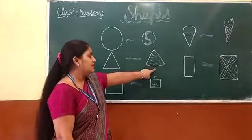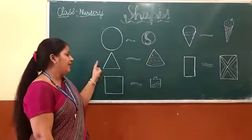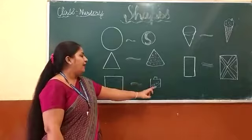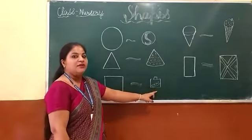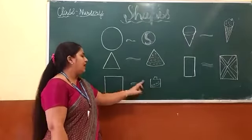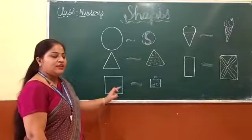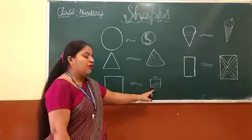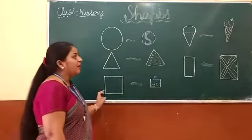Yes students, pizza slice looks like a triangle. And here is an ink pot. Ink pot looks like a square. Okay students, ink pot looks like a square.